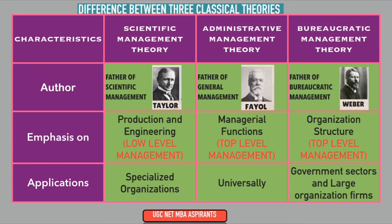Scientific management theory emphasizes production and engineering — the manufacturing side — and mostly concentrates on workers and supervisors. Administrative management theory gives importance to management functions: planning, organizing, staffing, leading and controlling, including top level management. Bureaucratic management theory gives importance to organizational structure, organizational hierarchy, and rational legal decision making rules, concentrating on top level management. For applications: scientific management is applicable to specialized manufacturing organizations; administrative management is applicable universally; and bureaucratic management is mostly applicable to government sectors or large organization firms.